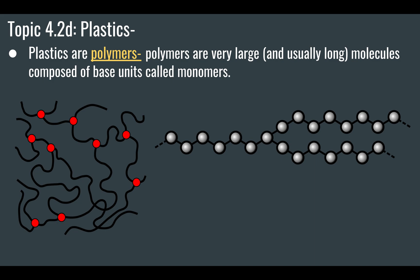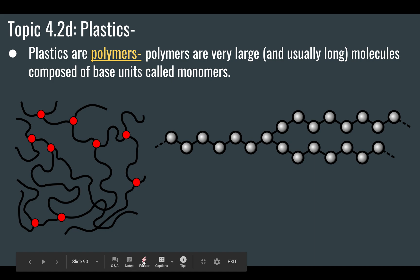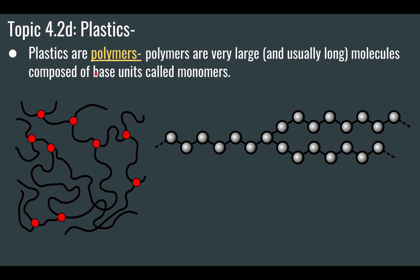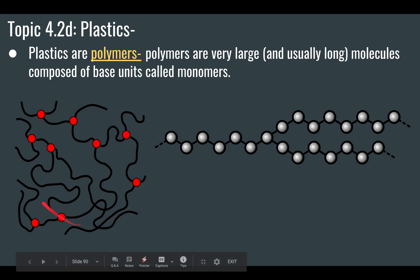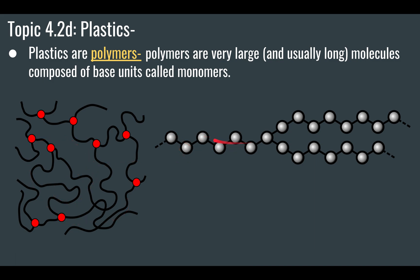In the most basic sense, plastics are something called a polymer. There are natural polymers and man-made polymers, but plastics are a type of polymer. Polymers are very large and usually very long molecules composed of base units called monomers. 'Poly' means many and 'mer' means molecules, so it's many molecules. A monomer is a shorter molecule. As you can see in these diagrams, there are repeating units within the plastic — that's what plastics really are: polymers.